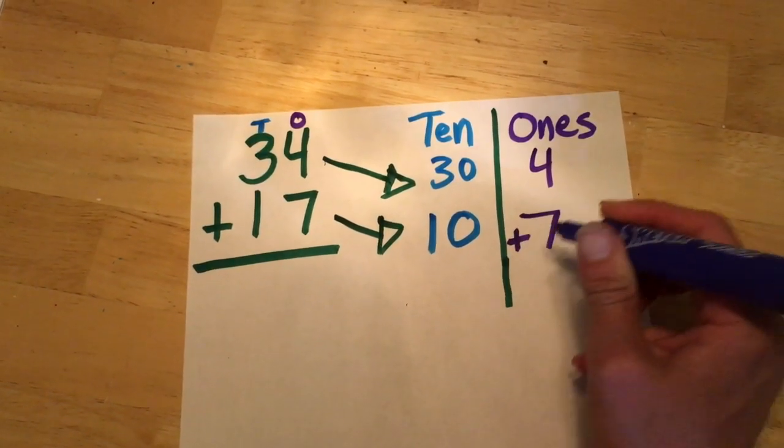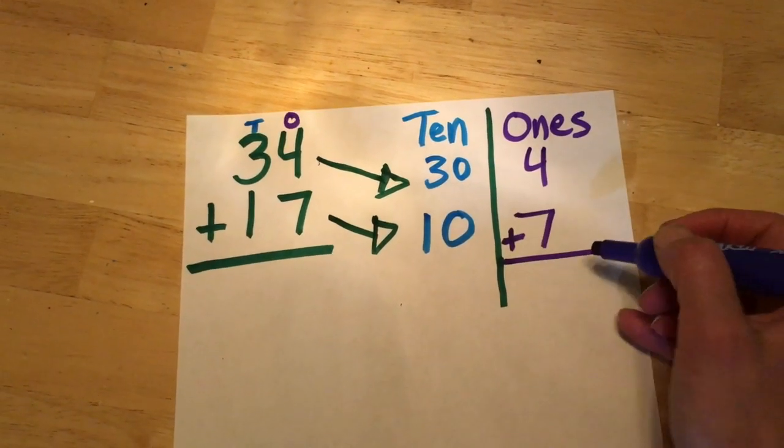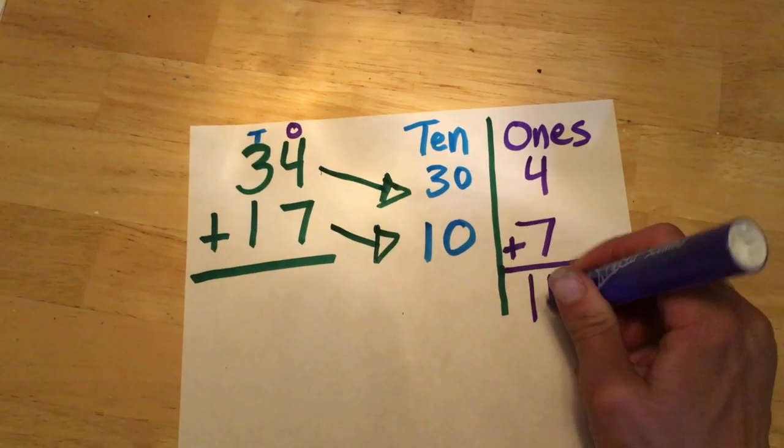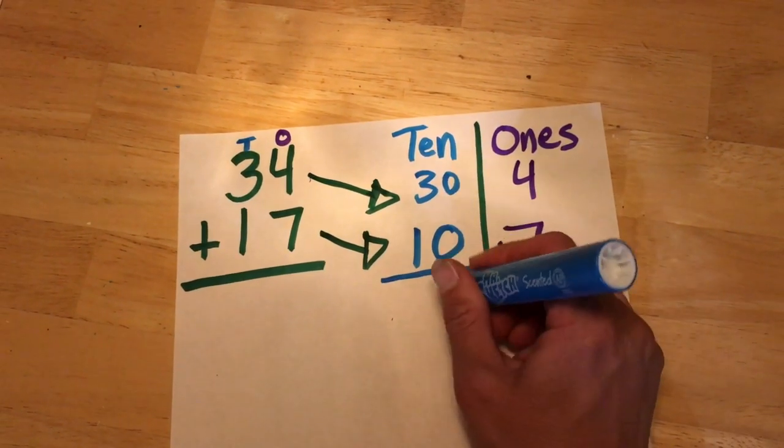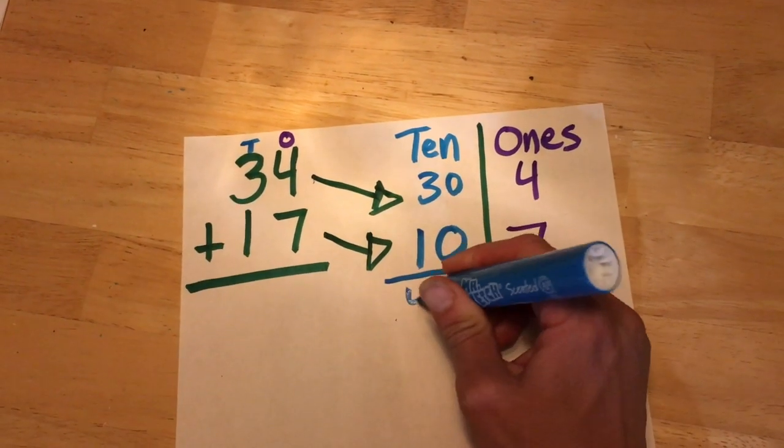So now we will add this up. Four plus seven is equal to 11. And if we go over into the tens, we've got zero plus zero, zero, and three plus one is four.